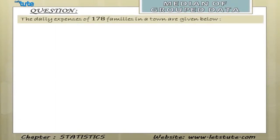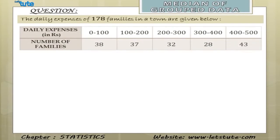The question is: the daily expenses of 178 families in a town are given below. We have been provided with the data regarding the daily expenses in terms of rupees of 178 families. If we carefully notice, we have been given observations in the form of class intervals. That means there is a lower limit and there is an upper limit. This means that our data has already been organized into groups. So, this is a grouped data.